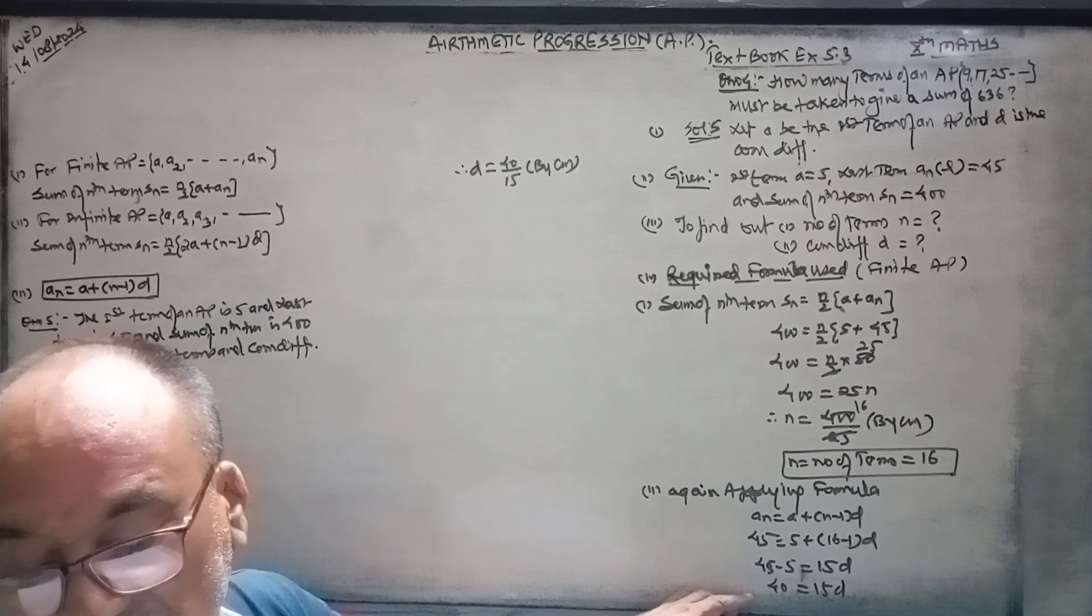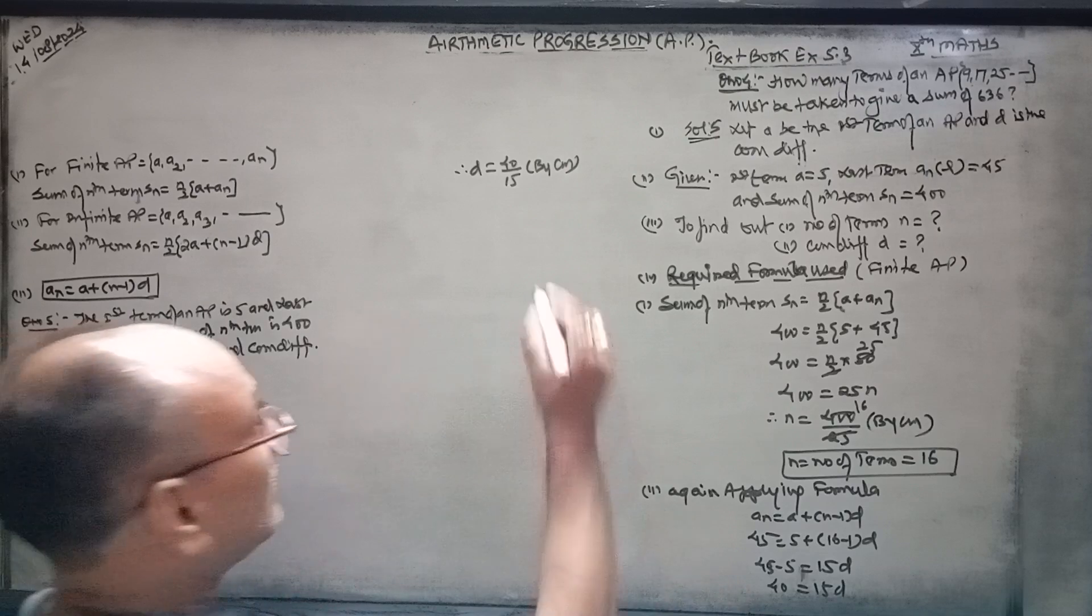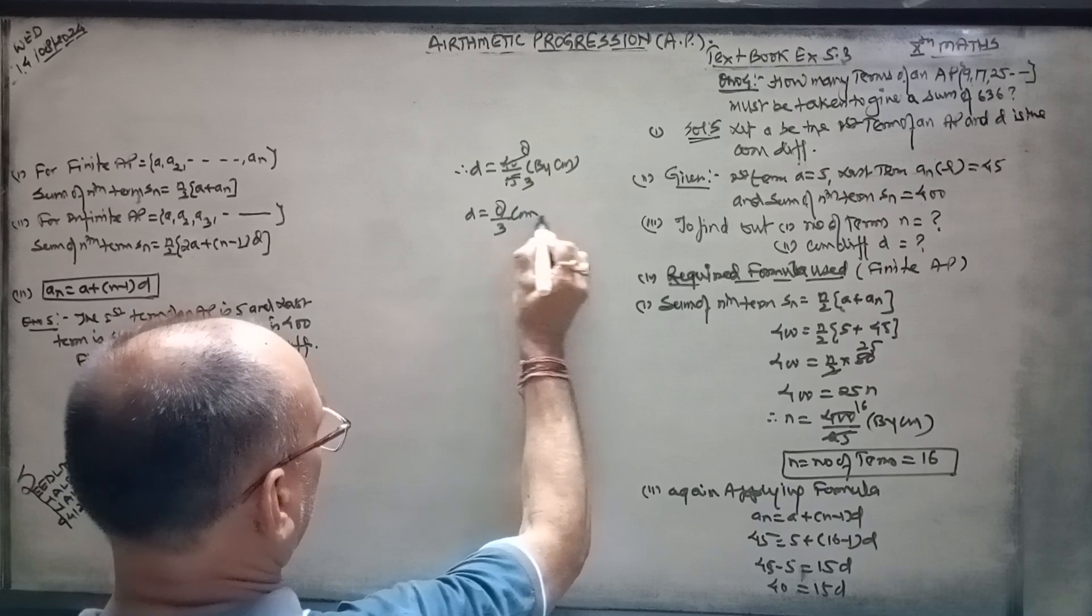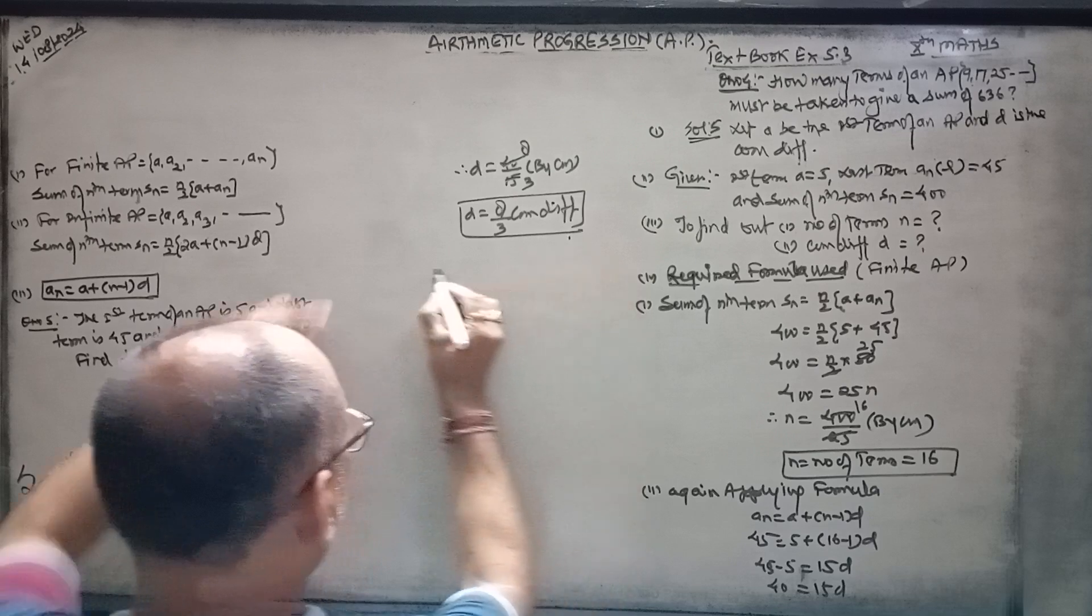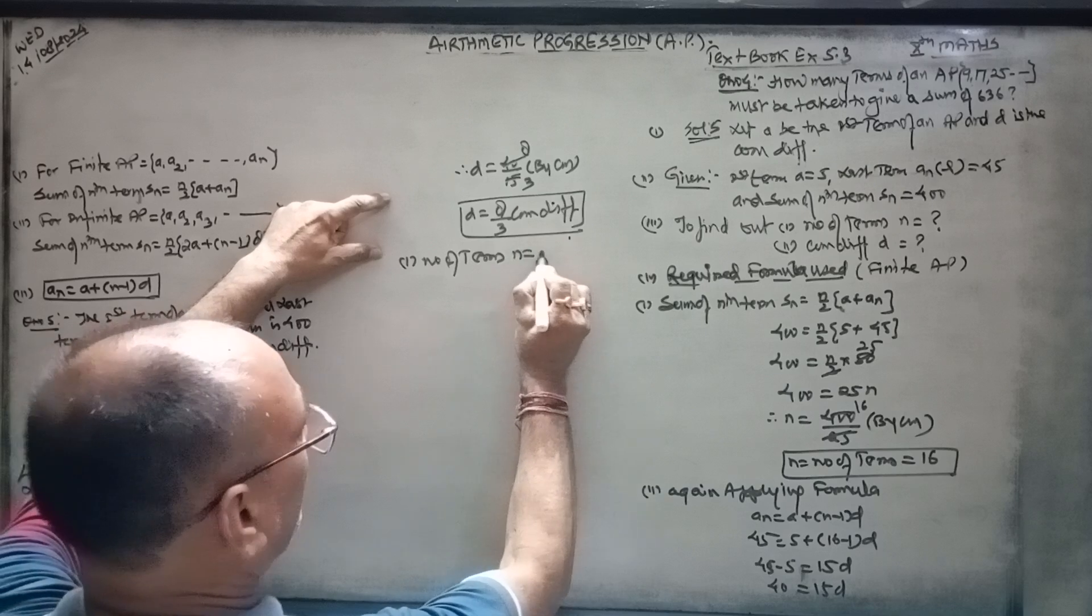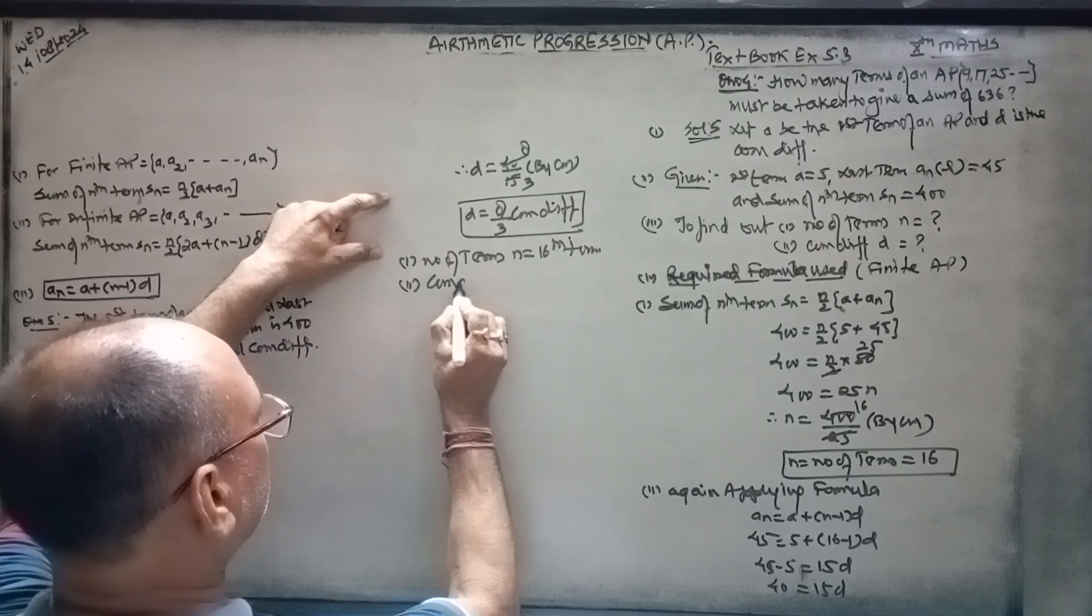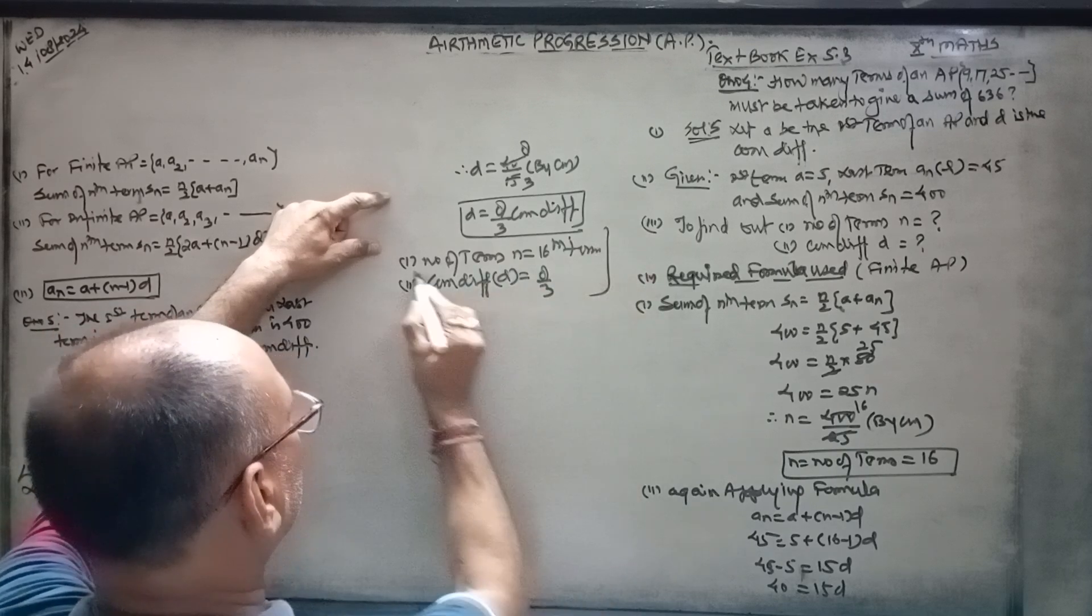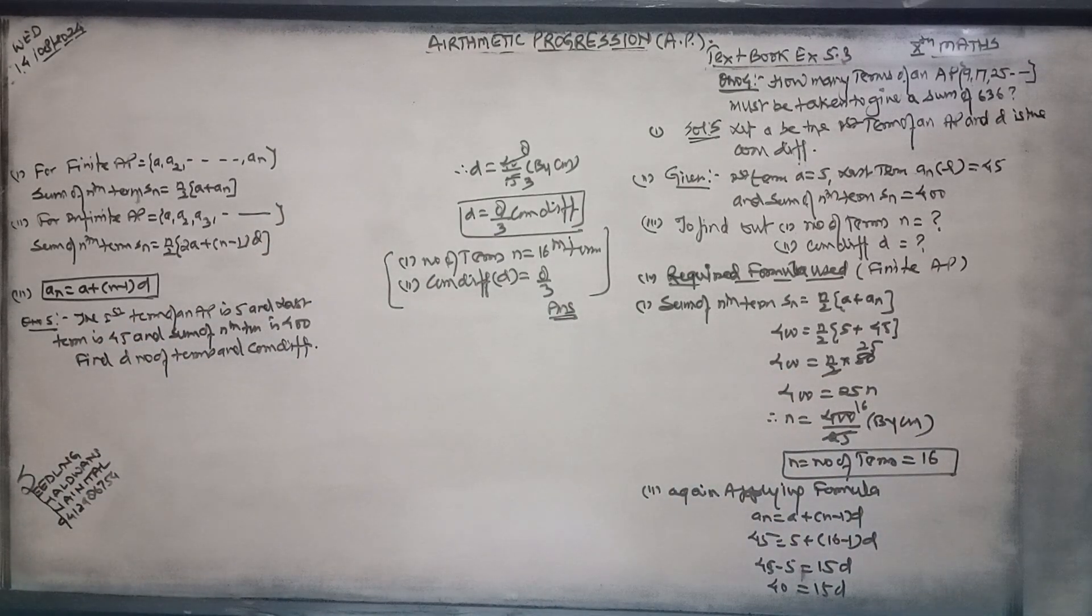Common difference d is equal to 8 by 3. This is your answer.